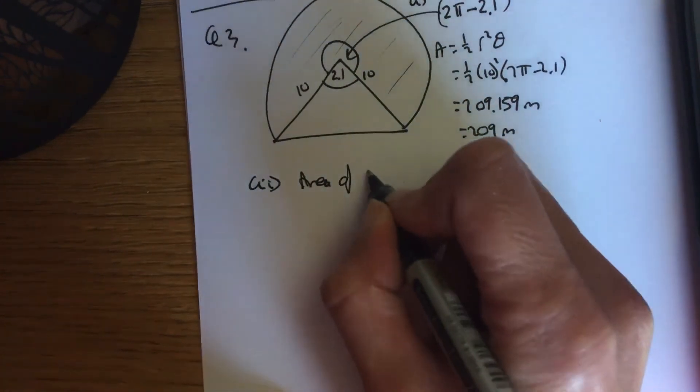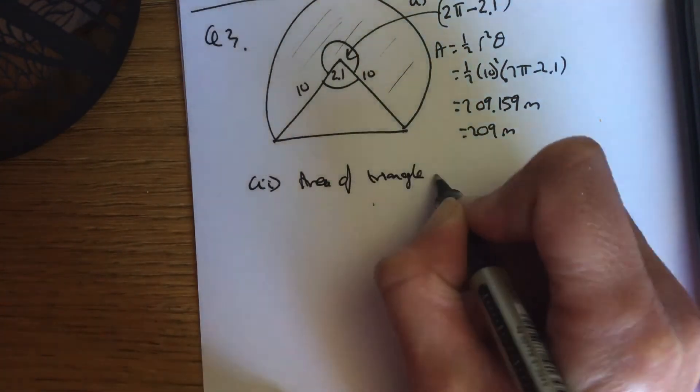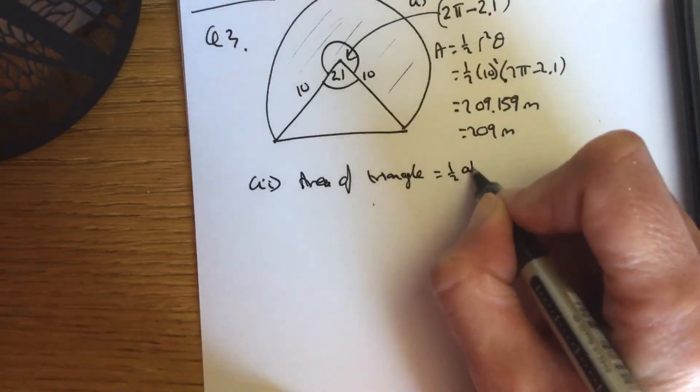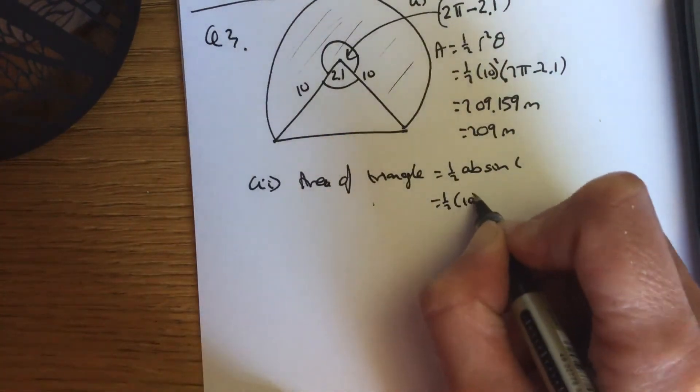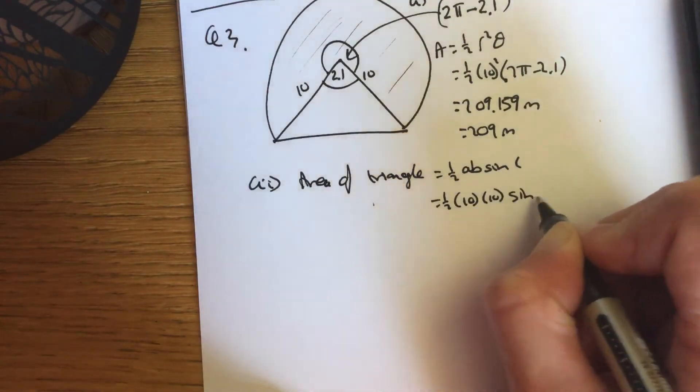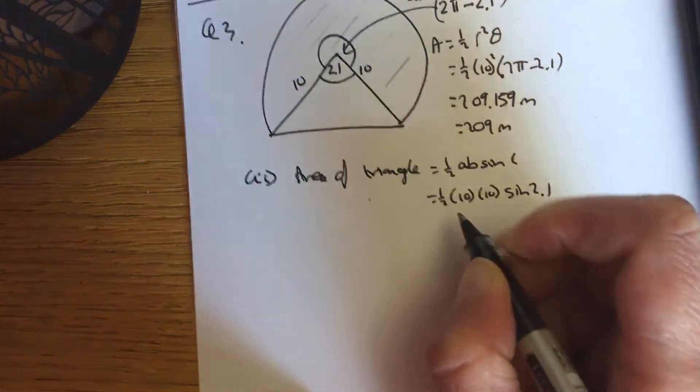So area of the triangle is, when it's not a right angle triangle, it's a half AB sin C. So it's a half AB. Now just make sure your calculator is in radian mode for this.